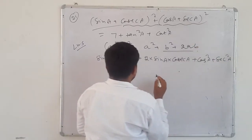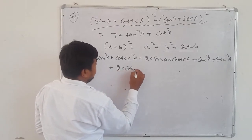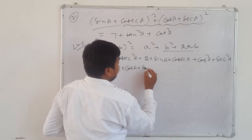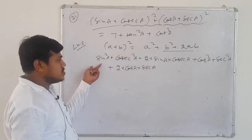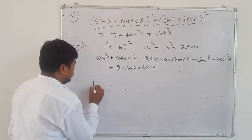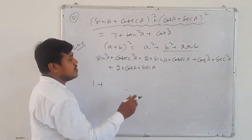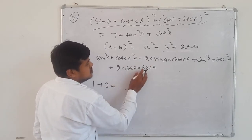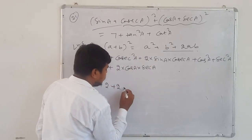Now simplify: sin²a + cos²a = 1. Sin × cosec = 1, so 1 × 2 = 2. Cos × sec = 1, so 1 × 2 = 2. Remaining: cosec²a + sec²a. So total: 1 + 2 + 2 + cosec²a + sec²a = 5 + cosec²a + sec²a.